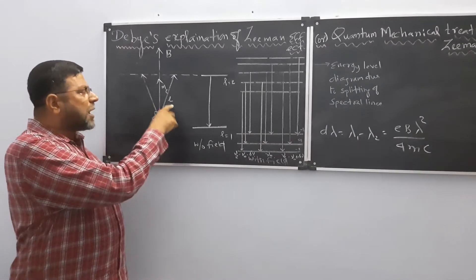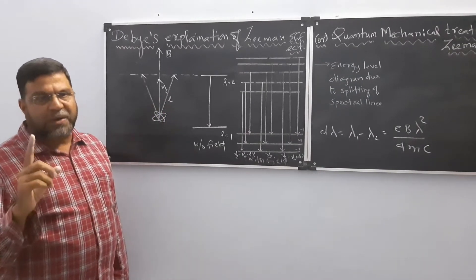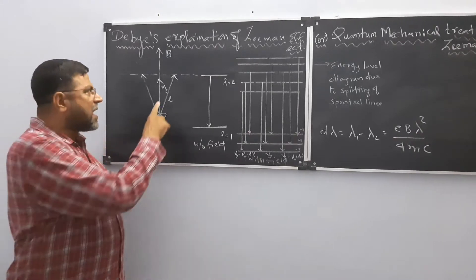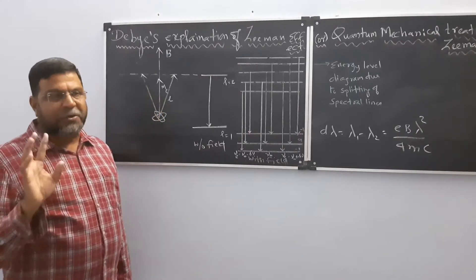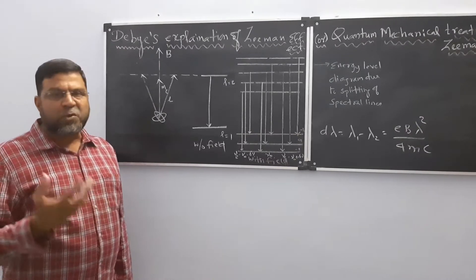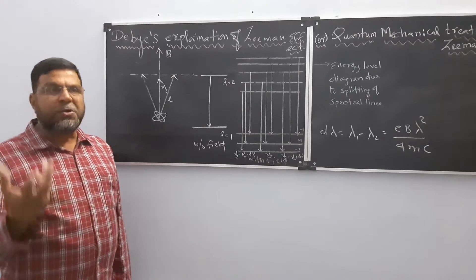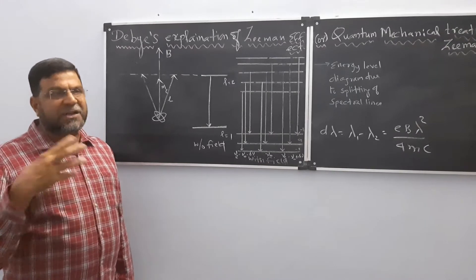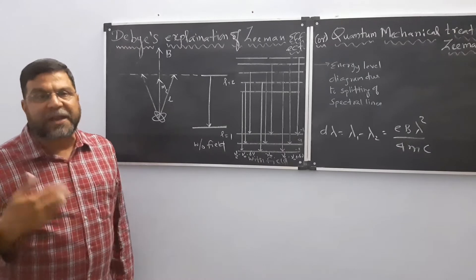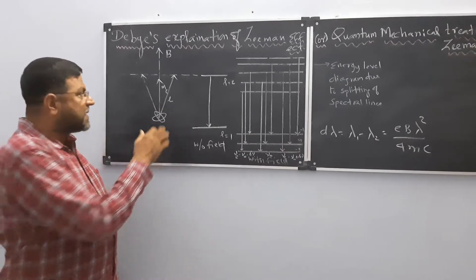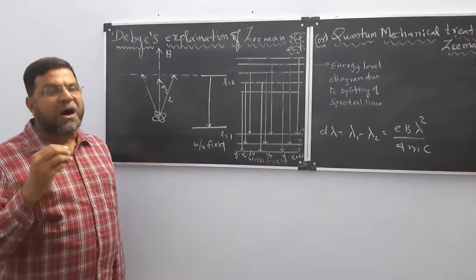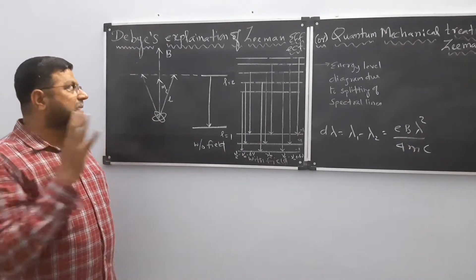You have two orbital quantum numbers: L is the orbital quantum number, and ML is the magnetic orbital quantum number. When spin is present, you get a spin quantum number. Due to the application of spin, you get the magnetic orbital quantum number ML.